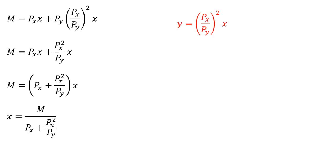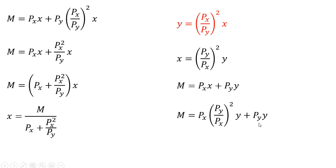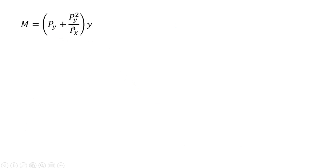To get the demand for good y, we take the expression we solved for x, plug it into the budget constraint, and solve for good y. The price of good x and price of good x squared simplify, we factor out a y term on the right-hand side, and dividing through by what's in parentheses gives us the demand for good y. These demands for good x and good y only apply when the consumer does not buy any units of good z.